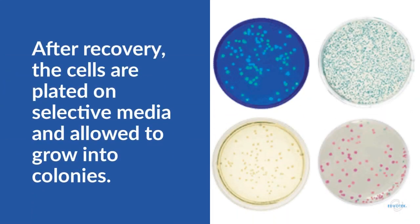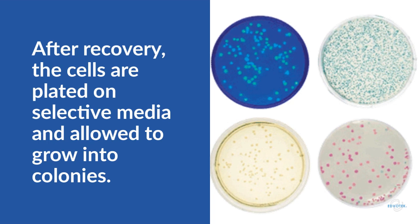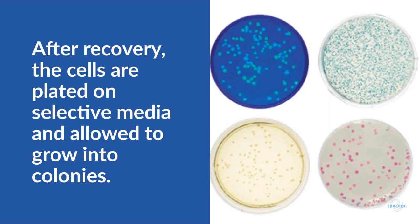Rich media is added to the cells, and then they are allowed to grow for 10 to 30 minutes. At this time, the cells repair their walls and membranes, copy the plasmid, and begin to express the antibiotic resistance. The cells are plated on selective media and allowed to grow overnight. Each colony on the plate represents one transformed cell.